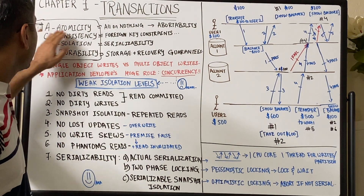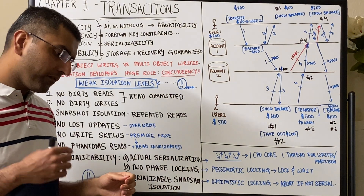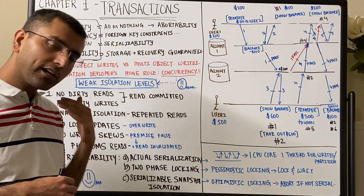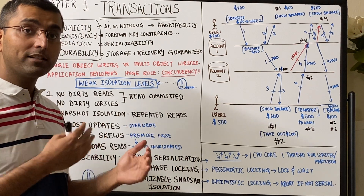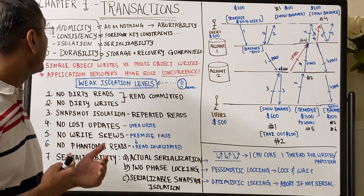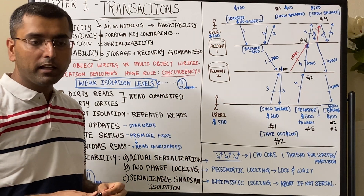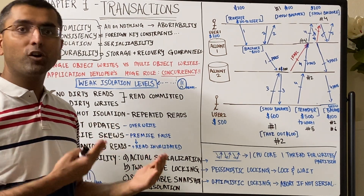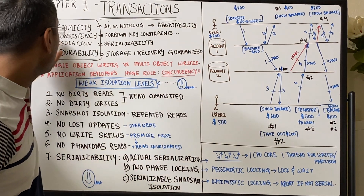ACID: A for atomicity. When I update a set of records, is everything actually going through or is only half of those updates going through? When it provides all-or-nothing guarantees, we say it's atomic, and we say that the database has atomicity as its property. When it doesn't provide that abortability or all-or-nothing, then we don't say it's atomic.